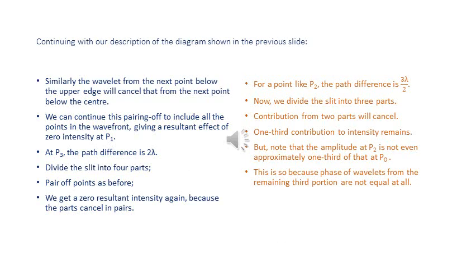We now continue with the description of the diagram. It would be best if you could keep Jenkins and White in front of you with the relevant diagram. If you consider the wavelet from a point right below the upper edge, its contribution is going to cancel from the point right below the center. We can continue this pairing off to include all points in the wavefront, giving us a resultant effect of zero intensity at P1. Now look at point P3 — the path difference for this point is 2λ. You can easily divide the slit into four parts, pair off the points as before, and get zero intensity again because the parts cancel in pairs.